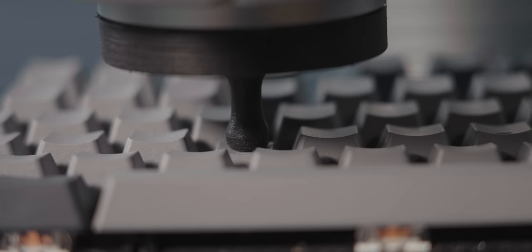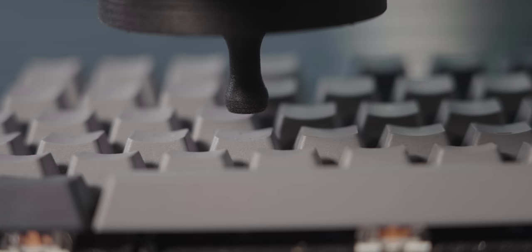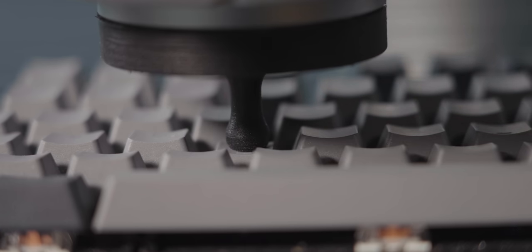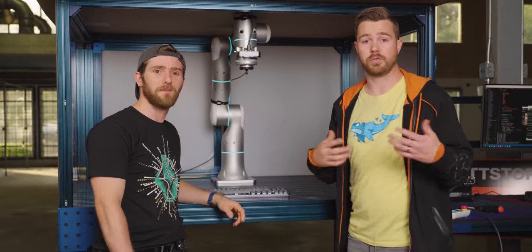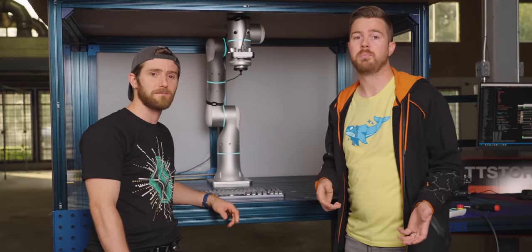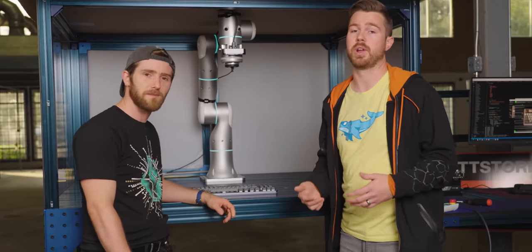So once that's done, the robot will move down onto the center point of each key, press down, measure the force as it travels, and then measure it as it releases as well. Doing this gives us not only the force graph for the switches being used in the board, but also lets us know if any of the switches are out of spec.